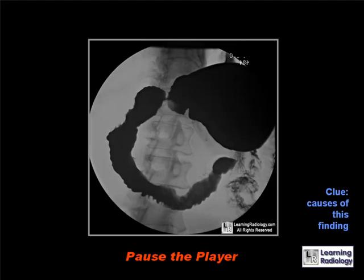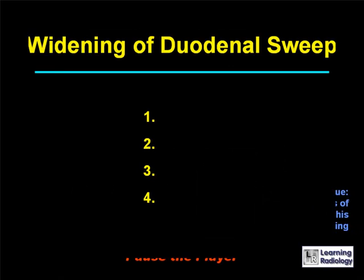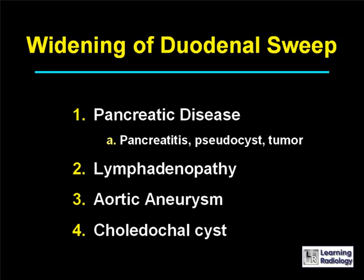The differential is for widening of the duodenal sweep. There are four causes: pancreatic disease, such as pancreatitis, pseudocyst, or a tumor of the pancreas; lymphadenopathy; an aortic aneurysm; or a choledochal cyst.